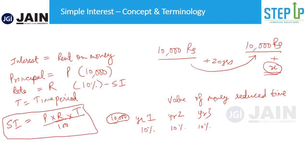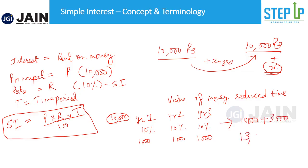This means that on the 10,000 rupees borrowed, you'd charge 10% additional after year one — that's 1,000 rupees. Here also 1,000 rupees, here also 1,000 rupees, because it's always charged on principal, which is constant. So if I return after three years, you'd say: don't give me just 10,000 rupees. I want 10,000 plus 1,000 per year into three — that's 3,000 — meaning 13,000 rupees. This is the simple concept of simple interest.